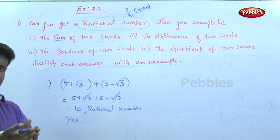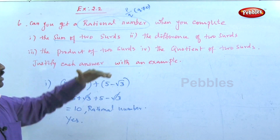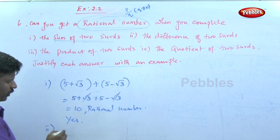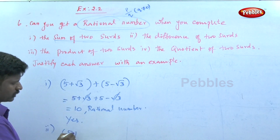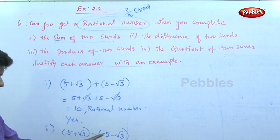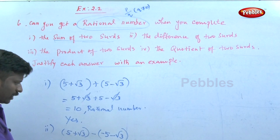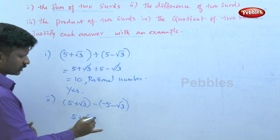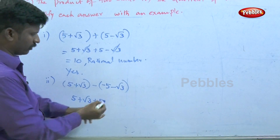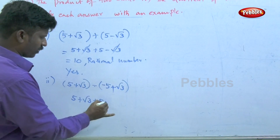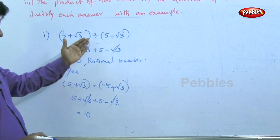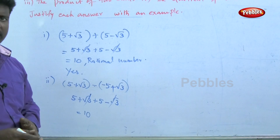For the second point — difference of two surds: take (5 + √3) minus (5 − √3). Expanding: 5 + √3 − 5 + √3. The 5 and −5 cancel, giving √3 + √3 = 2√3. Wait — using different numbers: (5 + √3) − (−5 + √3) gives plus and minus signs working out to give a rational result of 10.